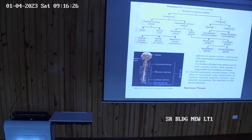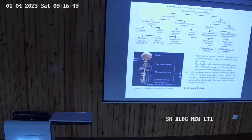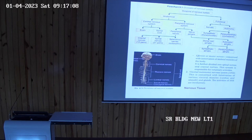Some cell bodies of the neurons are present outside the central nervous system. The cell bodies of the neurons present in the gray matter of the brain and spinal cord, but also some are present outside. These cell bodies of the neurons which are present outside the central nervous system are named as ganglia. Ganglia is a collection of cell bodies of neurons present outside the central nervous system.